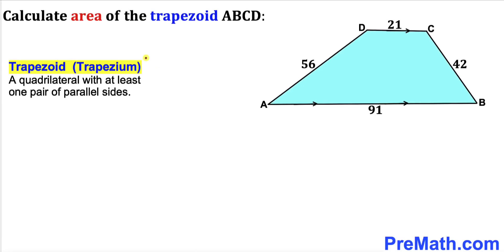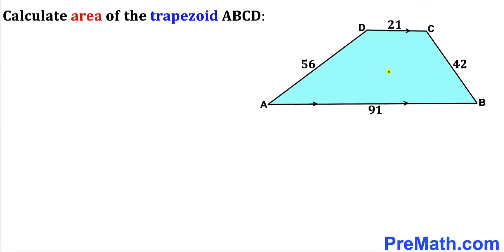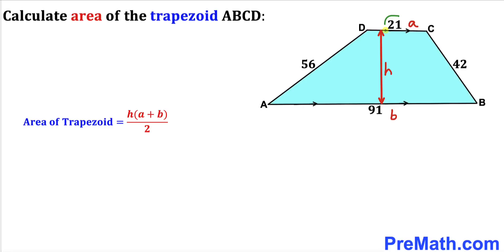Let's recall the trapezoid's definition. A trapezoid, also called a trapezium, is a quadrilateral with at least one pair of parallel sides. In our case, AB is parallel to CD. Since we want to calculate the area, let's recall the area of a trapezoid formula: Area equals height times (A plus B) divided by 2. In our case A equals 21 and B equals 91. The only thing we need to calculate is the height H.